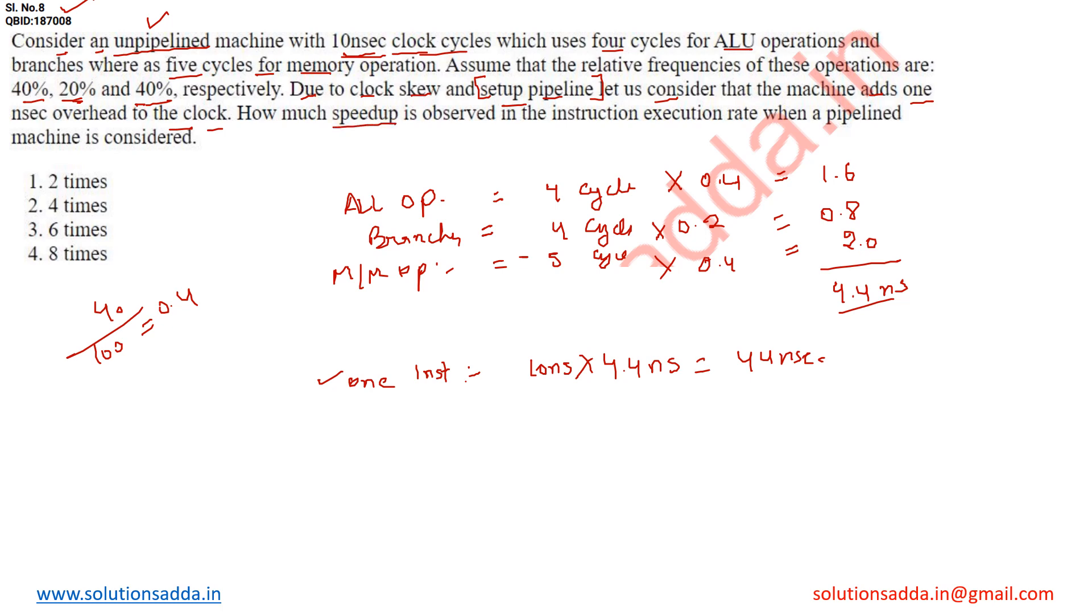How much speedup is observed in instruction execution rate when a pipeline machine is considered? To convert it into pipeline, it previously took 10 nanoseconds, then 10 plus 1 additional nanosecond becomes 11 nanoseconds. We have two values: 11 and 44 nanoseconds, and we need to find out the speedup.